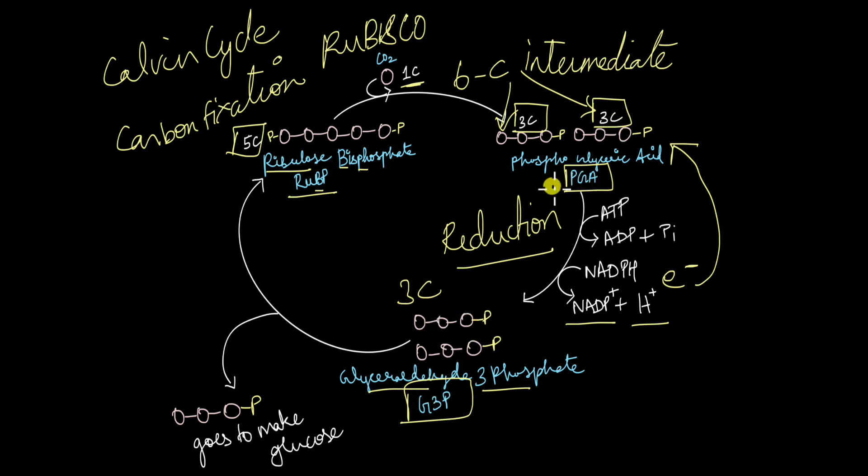PGA, phosphoglyceric acid is converted to glyceraldehyde 3-phosphate. Now we have two molecules of glyceraldehyde 3-phosphate. Out of this, one molecule goes ahead to make glucose. One of the molecules goes ahead to make glucose. The other molecule goes ahead to regenerate this RUBP. This is the regeneration stage.